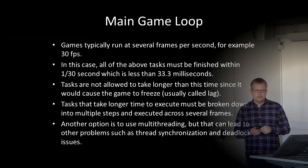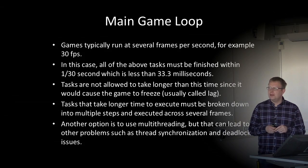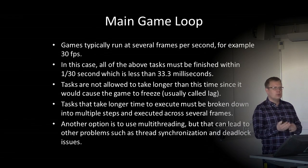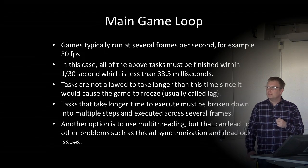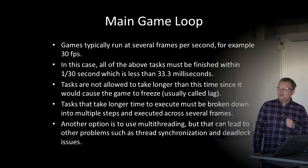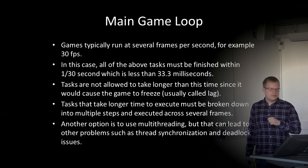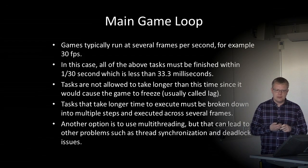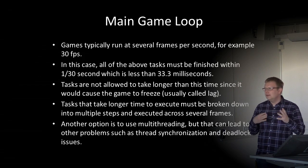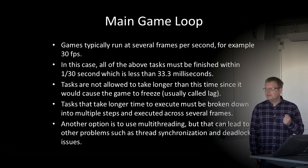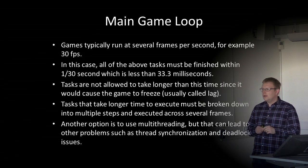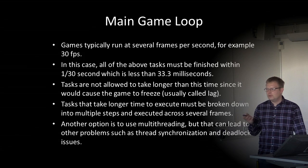Games typically run at several frames per second — for example, 30 FPS. If the game runs at 30 FPS, all tasks in the loop must finish within one-thirtieth of a second, which is less than 33.3 milliseconds. Tasks are not allowed to take longer, as this causes the game to freeze momentarily — commonly called lag. Tasks that take longer must be broken down into multiple steps executed across several frames. Another option is multi-threading, but that can lead to thread synchronization and deadlock issues, so it should be used carefully if you are not experienced in parallel programming.